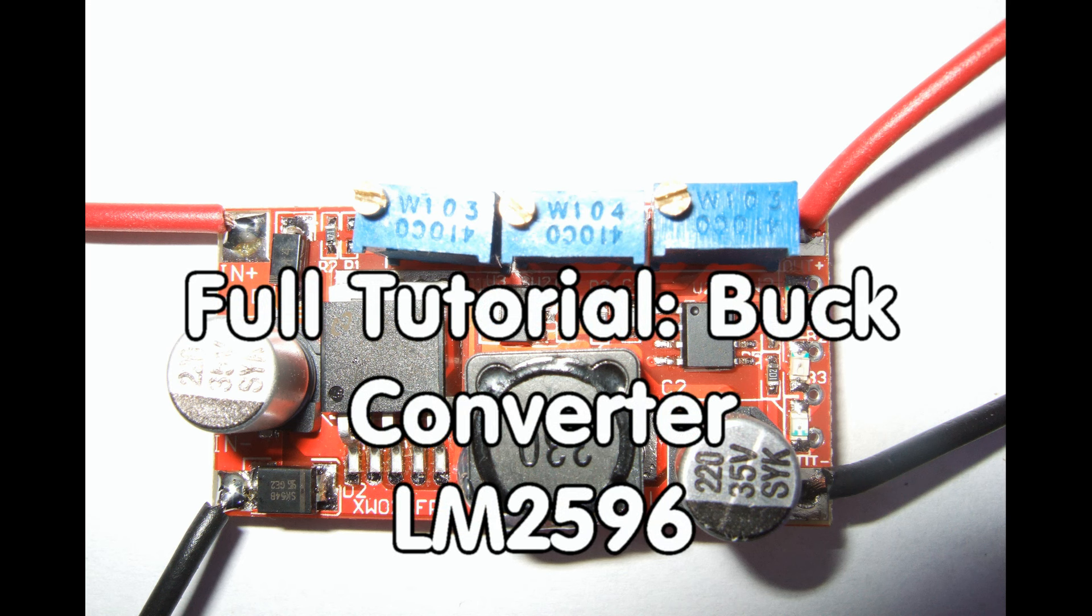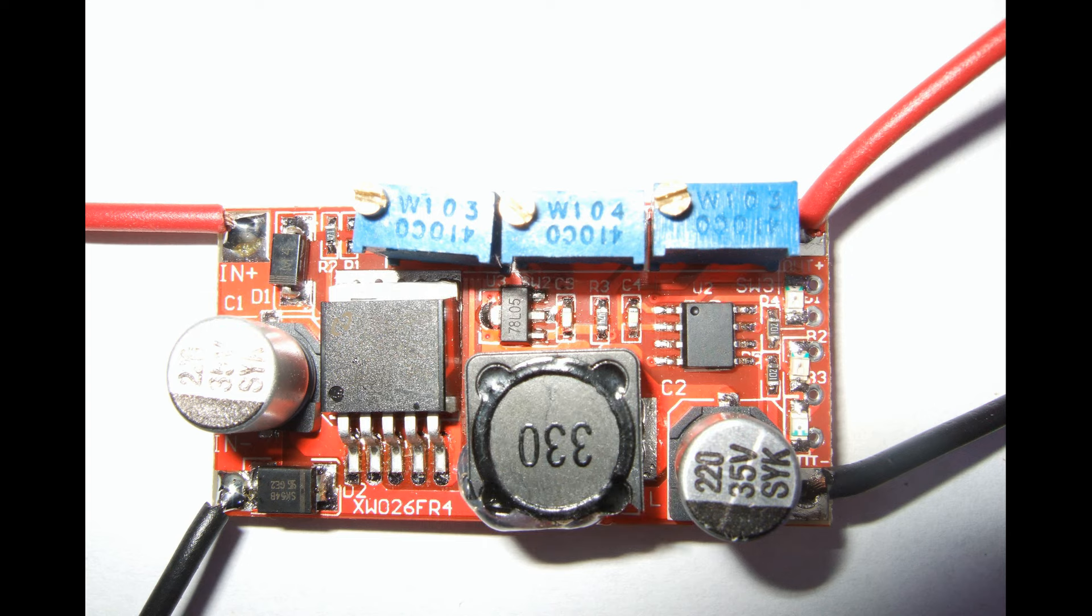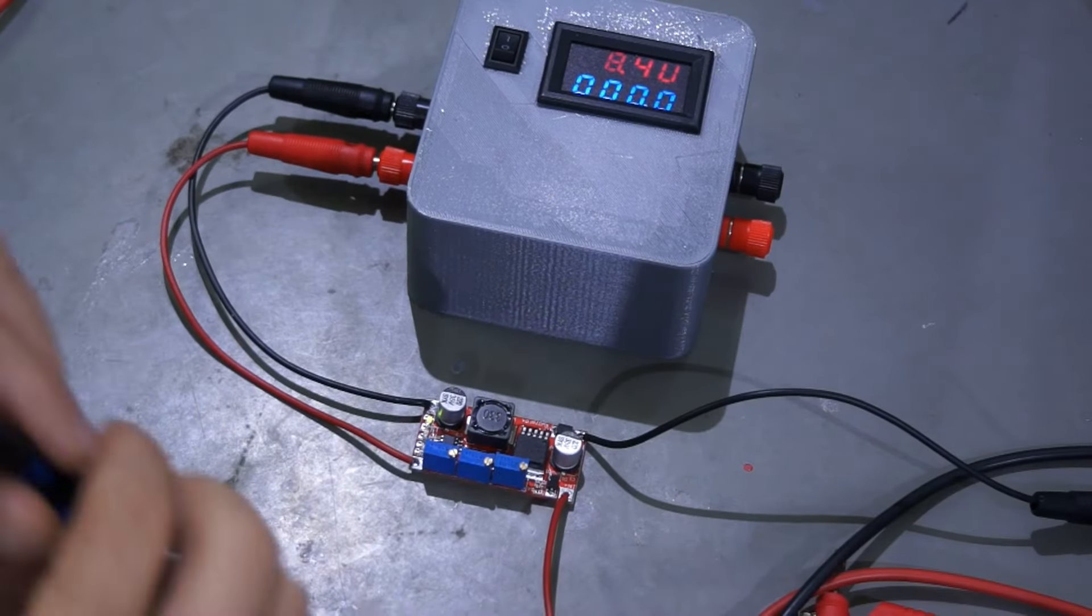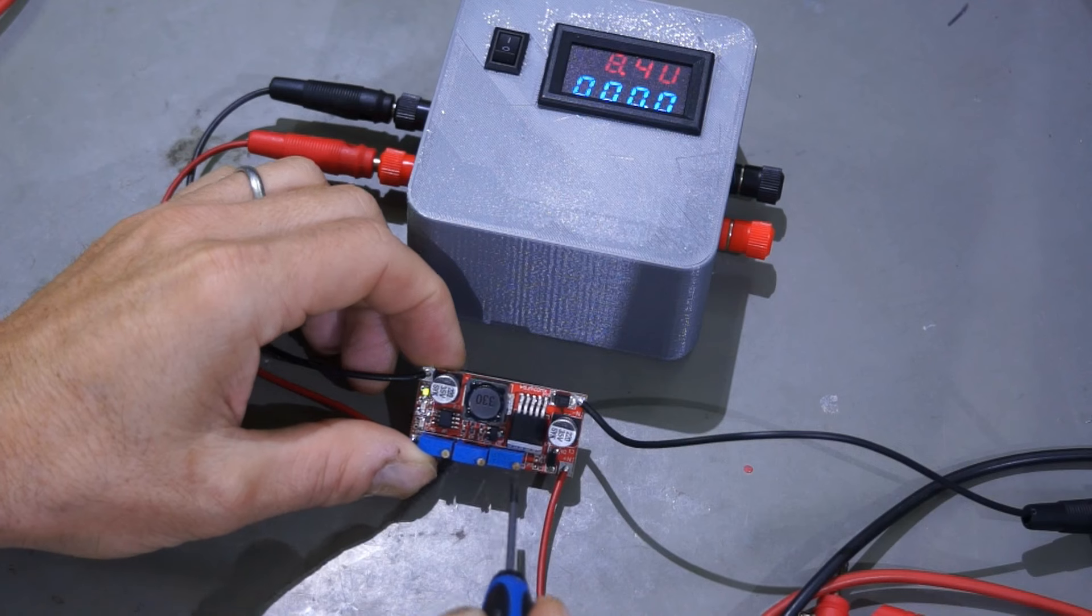Grüezi Youtubers! Here is the guy with the Swiss accent again. There are other videos about small buck converters. This video concentrates on the converter with three trimmers, as shown in this picture. It shows its function and the purpose of all three trimmers.